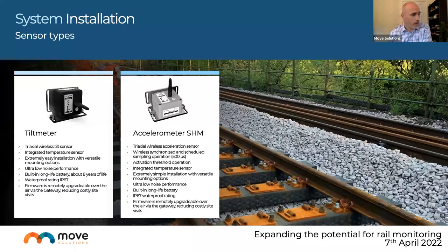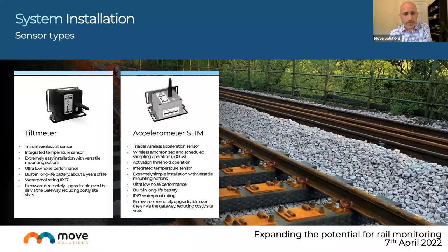The accelerometer achieves ultra-low noise performance, very high confidence in data quality, and exceptional battery life — taking upwards of 40 to 640 readings per second — achieving several years of battery life because of smart operation and threshold settings ensuring data is only recorded and communicated when meaningful. Like the tilt, it is IP67, and firmware is updated remotely via LoRaWAN communication from server to gateway to sensor.